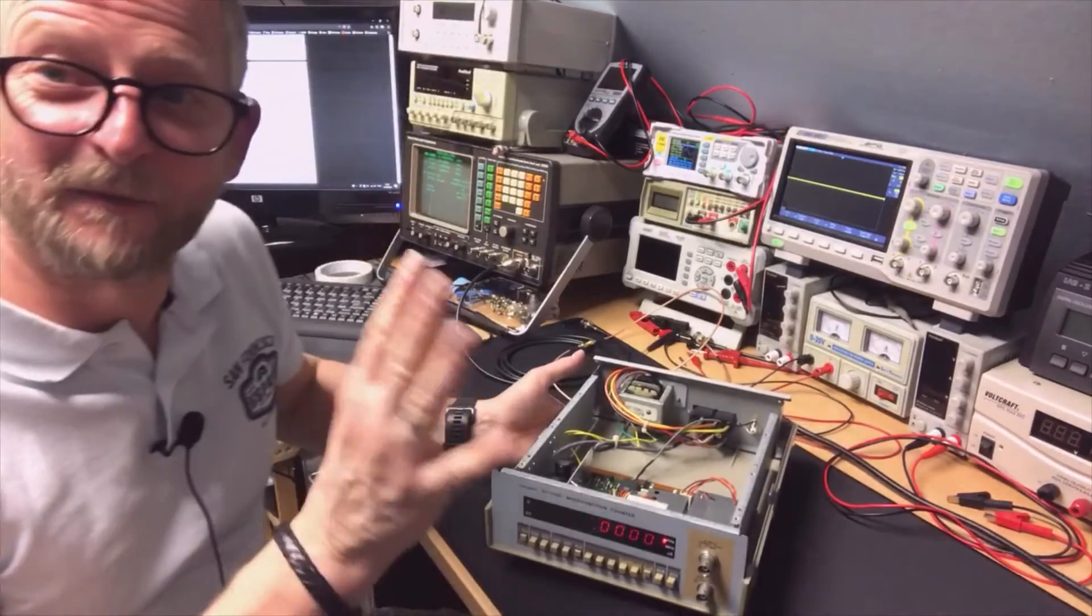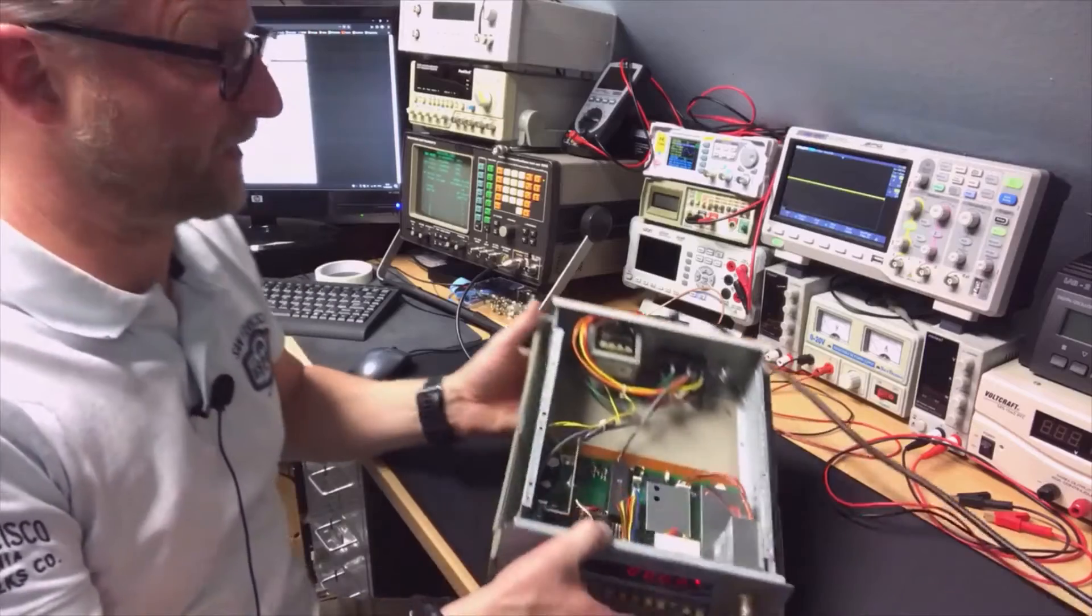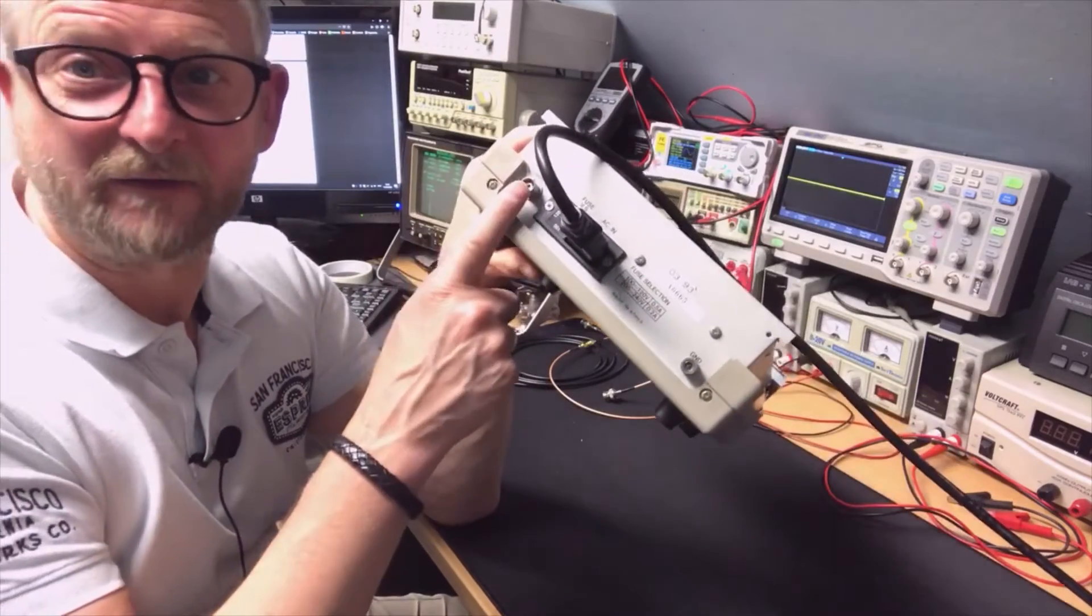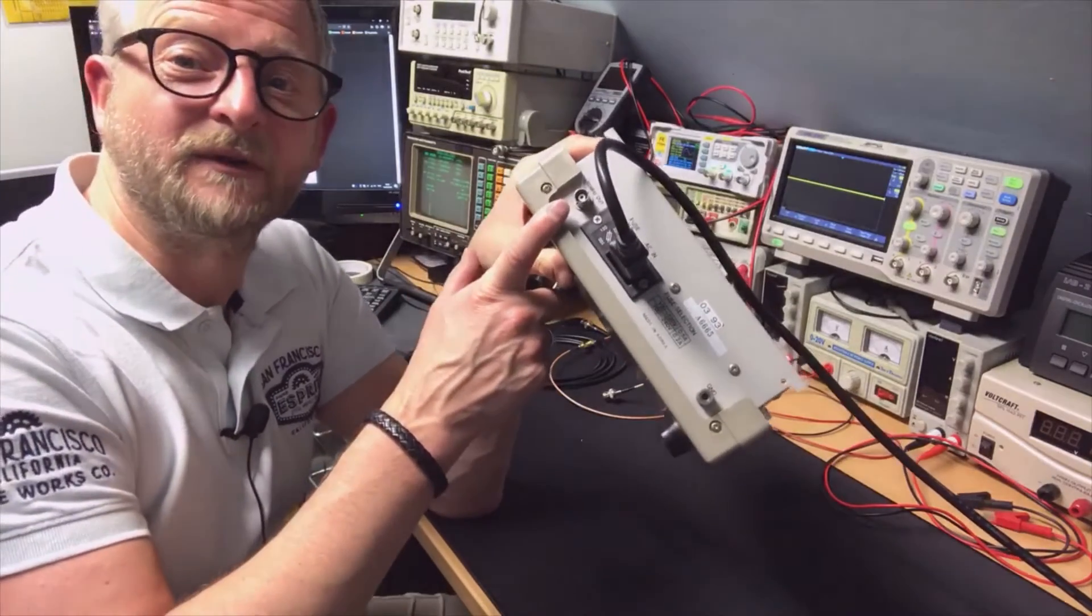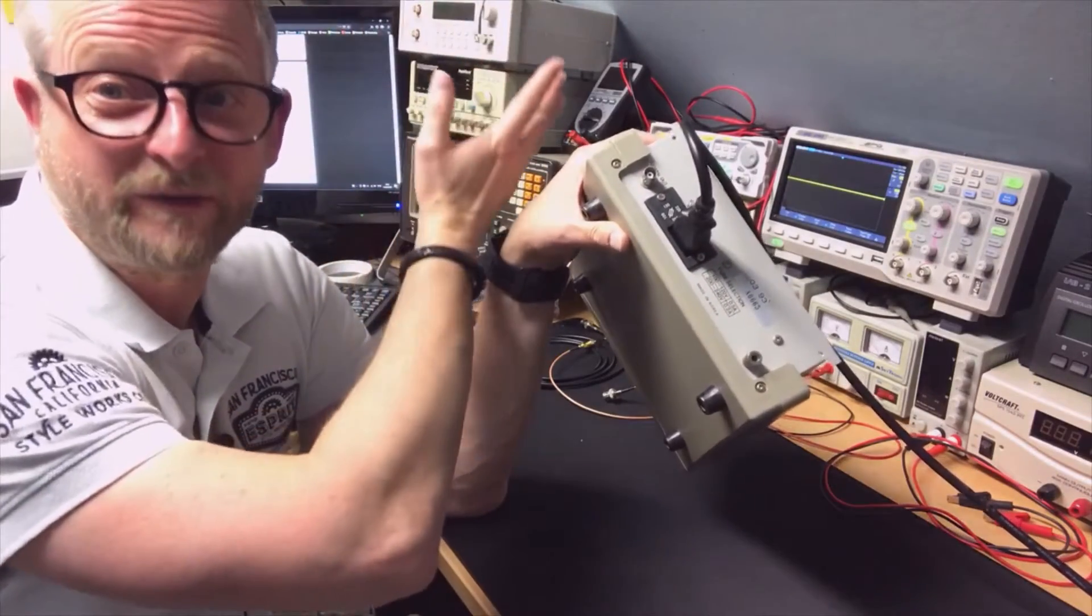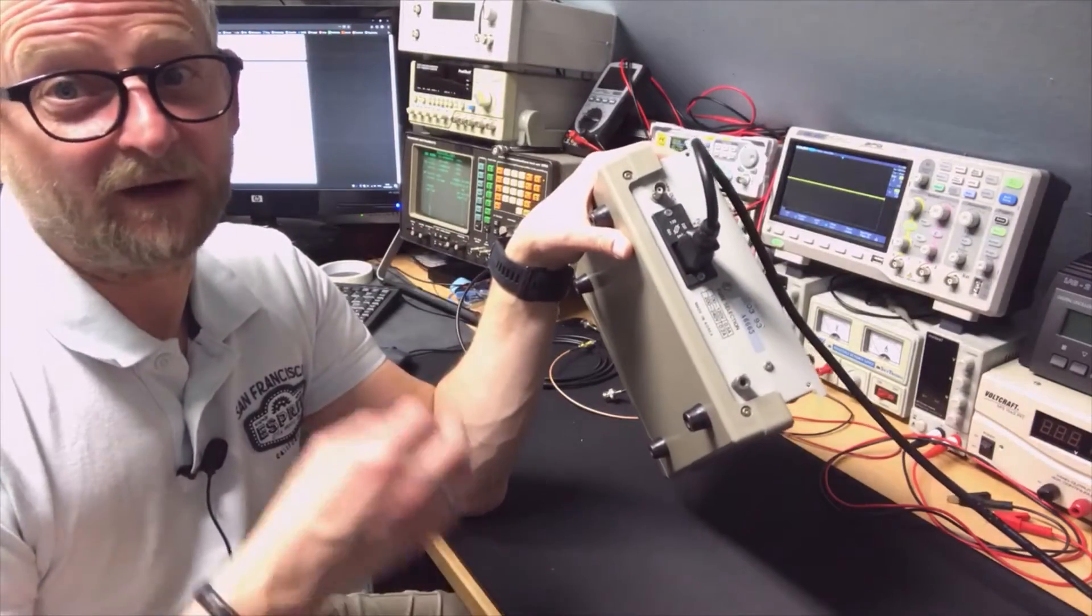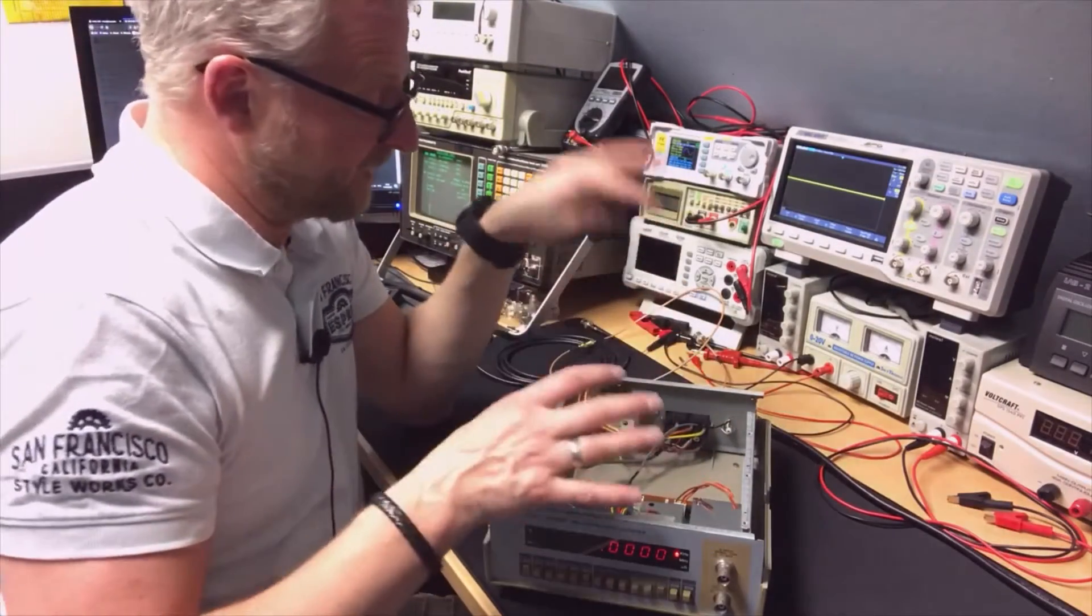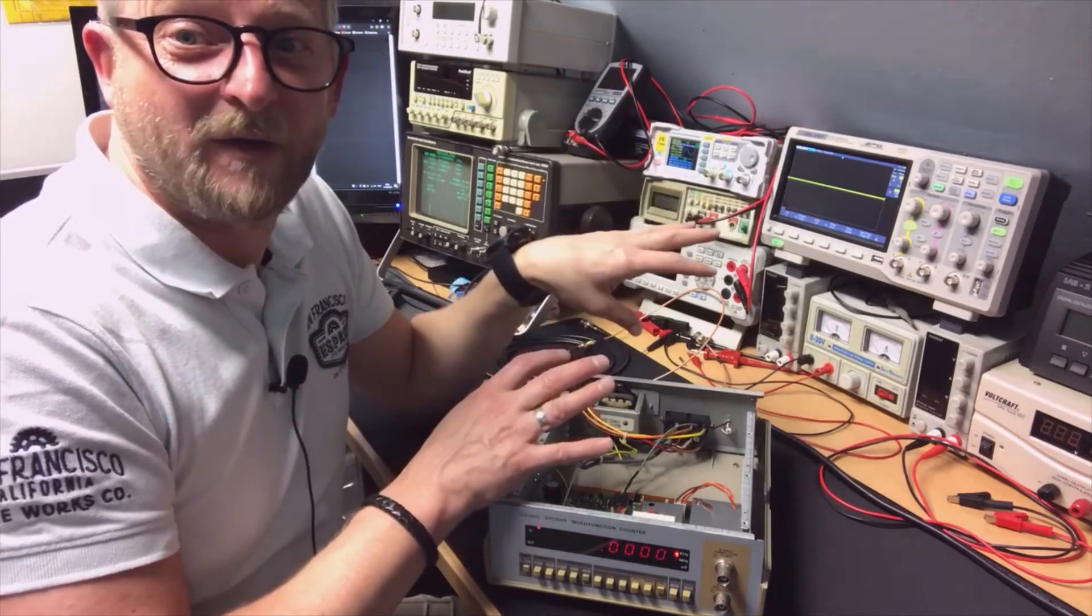Then there is method number two. That is, if you are lucky enough to have a frequency counter with a 10 megahertz out or oscillator out, you can also try to measure this oscillator frequency with another frequency counter that is better or that is connected to a GPSDO or another lab reference. Then you can compare those frequencies. If I do that here, in this case, because I didn't do the modification yet, we should see that it's more or less 80 hertz off. So I'm gonna connect that and then I come back.